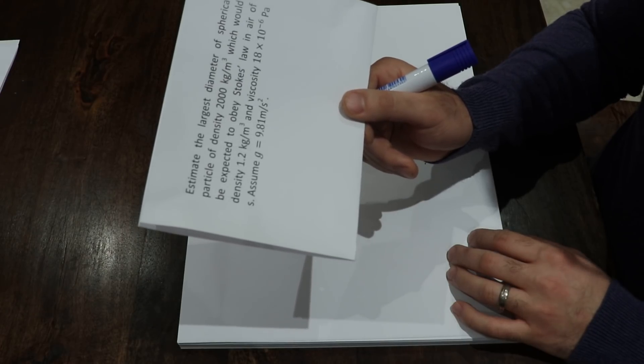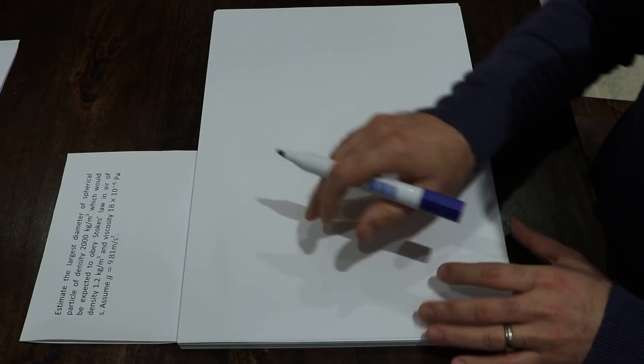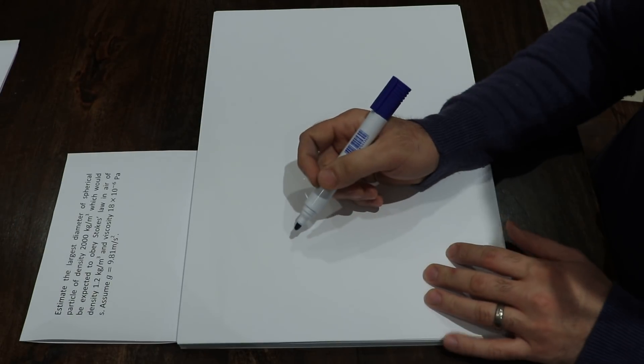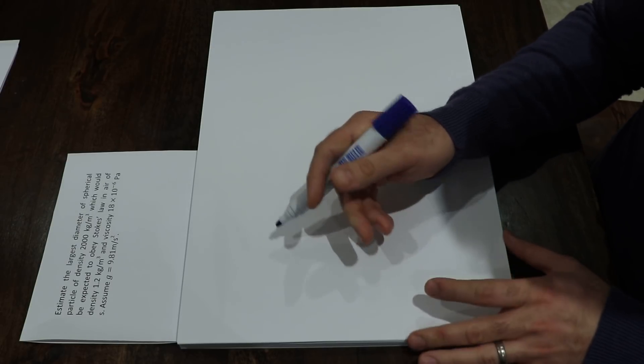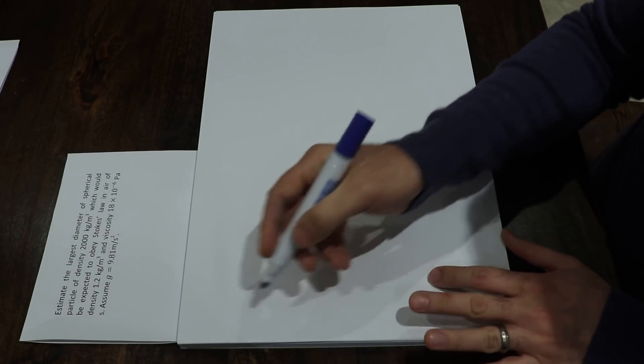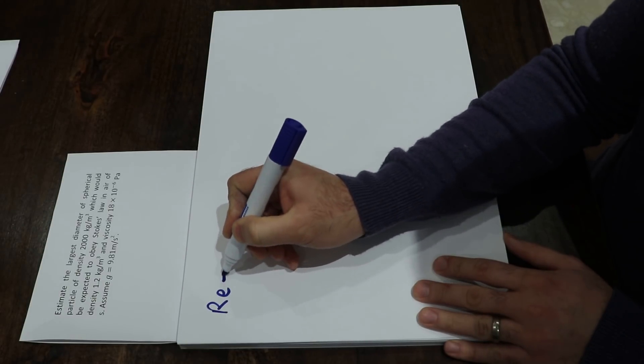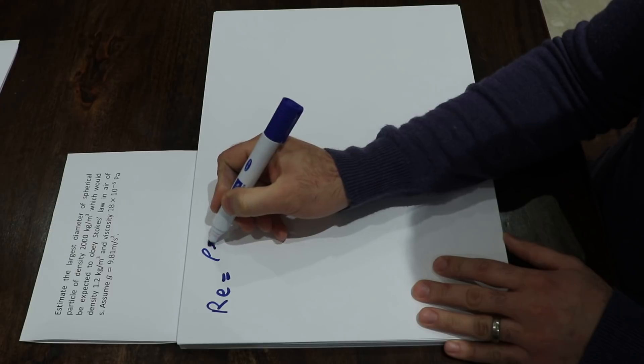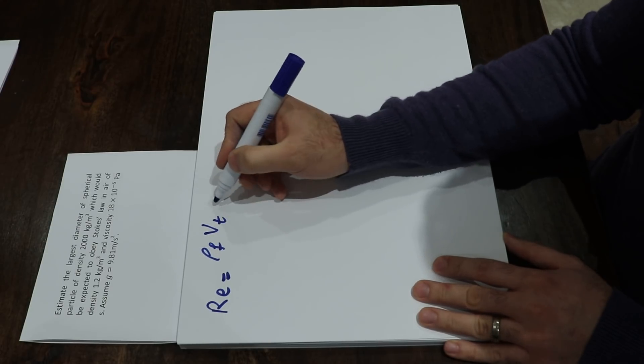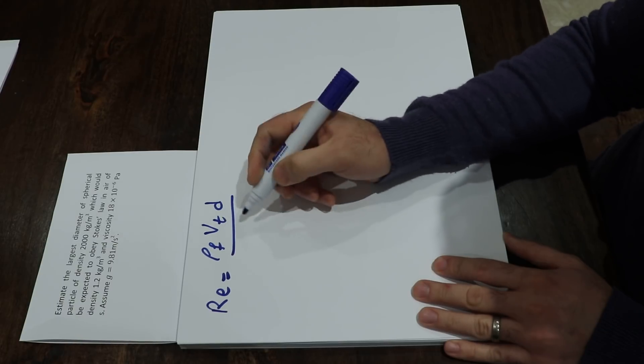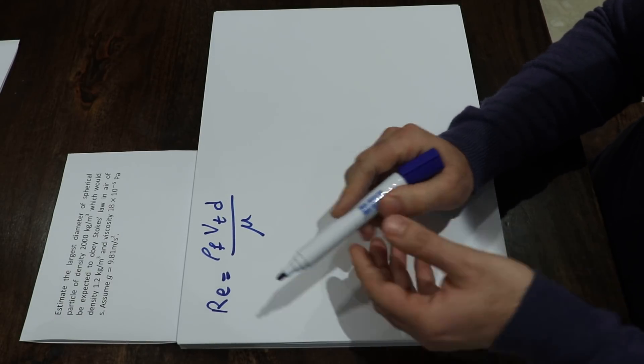We know that in the Stokes regime, the Reynolds number should be less than 0.3. So the upper limit for the Reynolds number is 0.3. If you write the definition of the Reynolds number: Re = ρF·V·d/μ, where ρF is the density of the fluid, V is the terminal velocity, d is particle diameter, divided by viscosity.